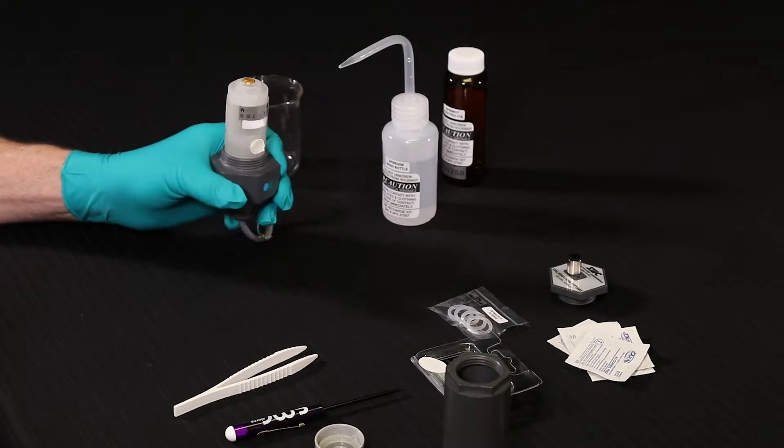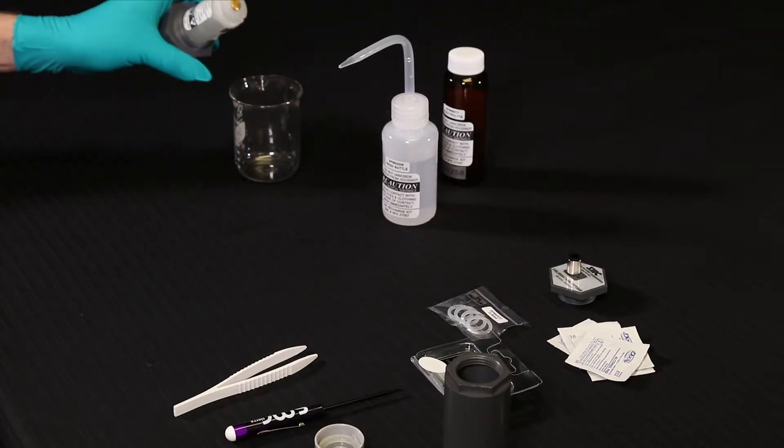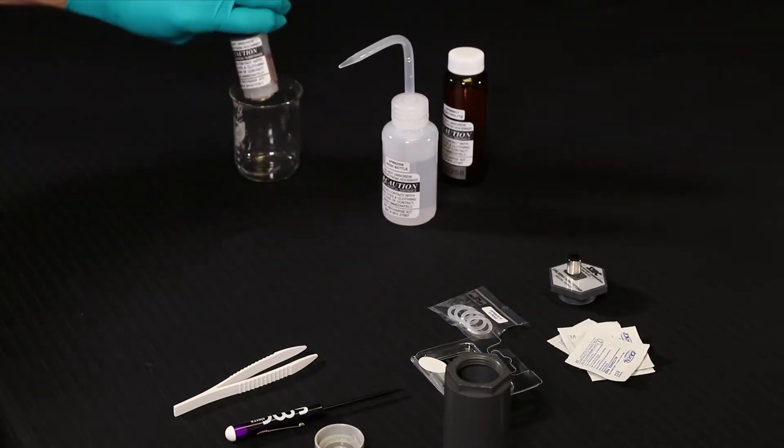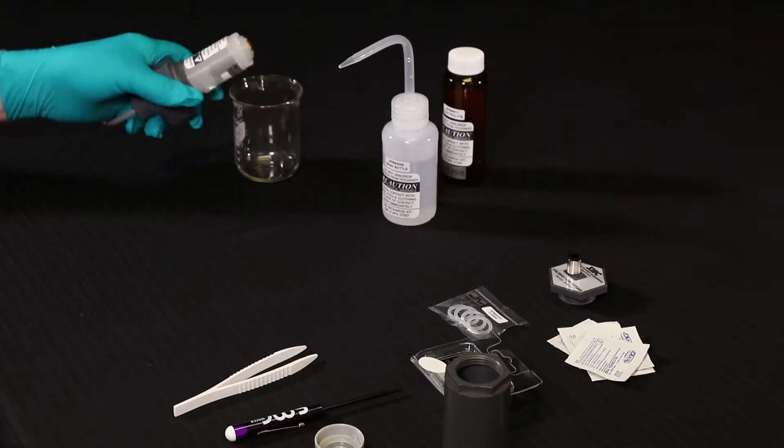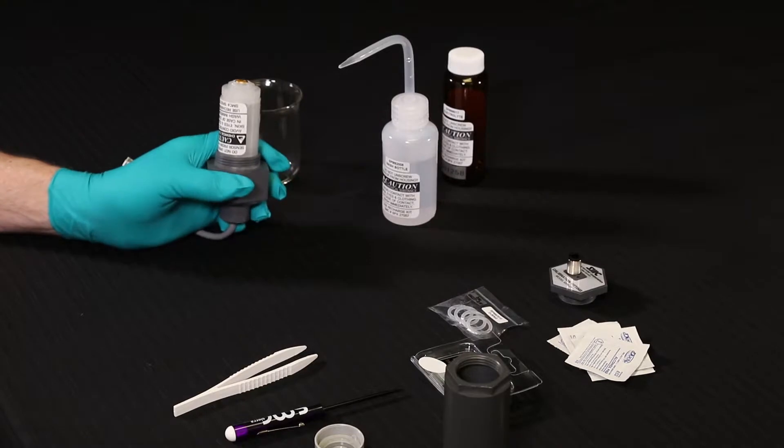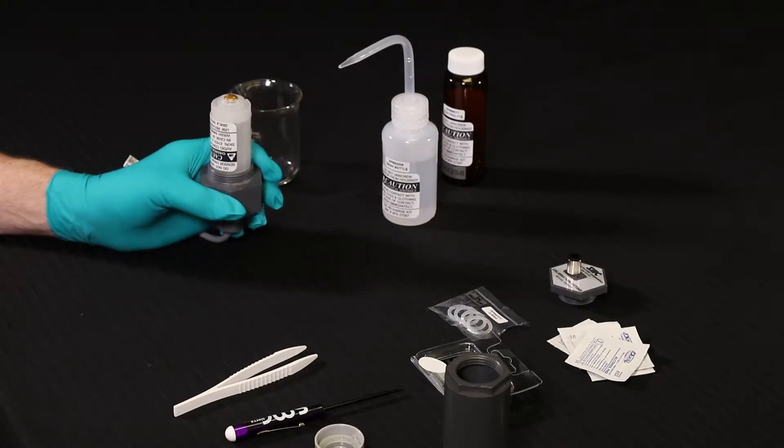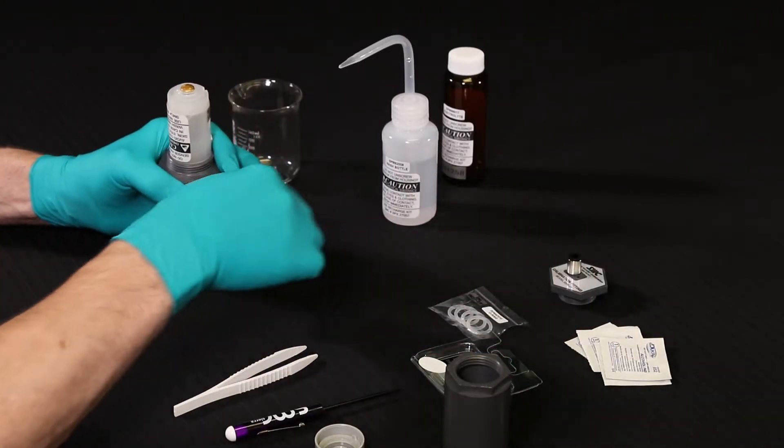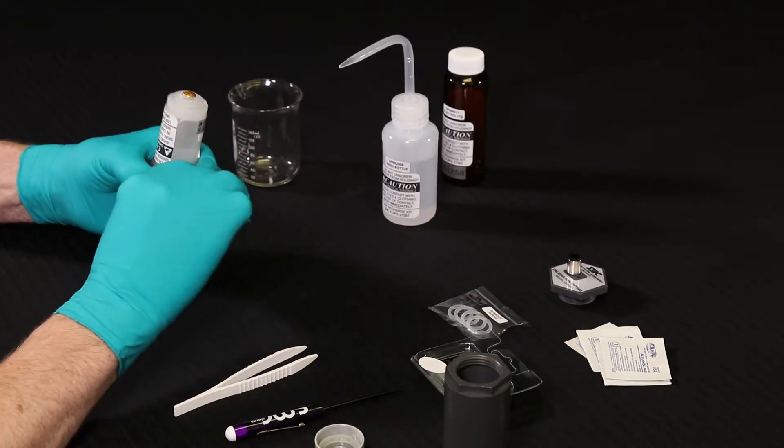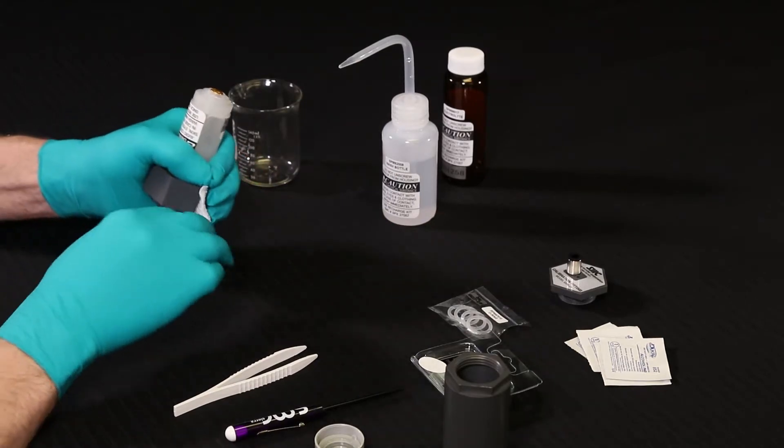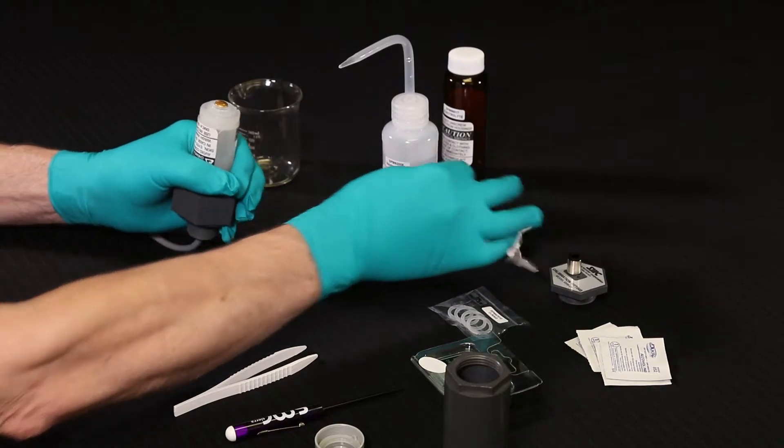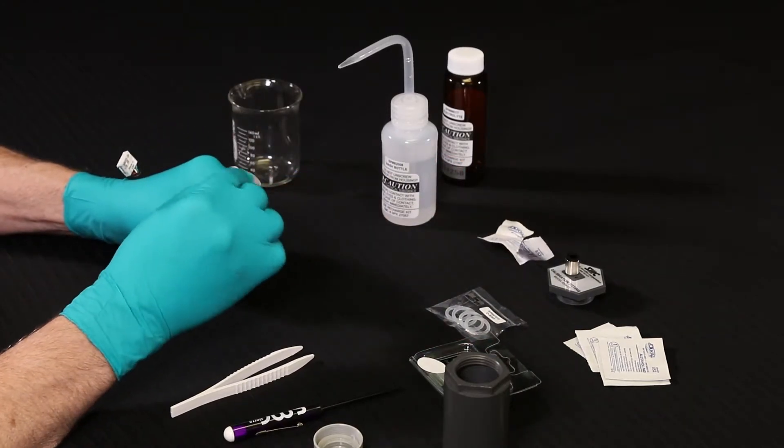Next, pour out the old electrolyte into the container for disposal. Next, use the alcohol swab to clean the electrode tip. Be aware that the tip may be discolored due to oxidation. Continue to scrub. The electrolyte tip must be clean and shiny.